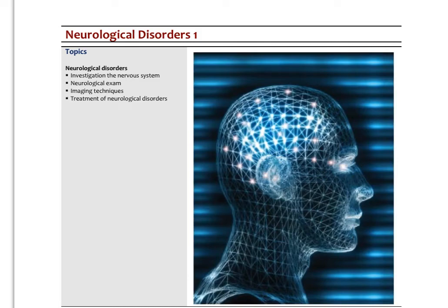This will be the first lecture on neurological disorders. We're going to look at the general principles of what we're looking for when we examine the neurological system. We'll talk about the neurological exam, the neuro exam, different types of imaging techniques to detect neurological disorders, and then a general summary of how we might think about approaching neurological disorders using the therapeutic order.